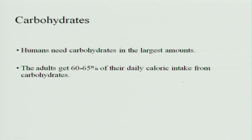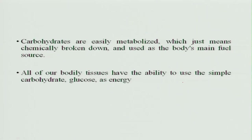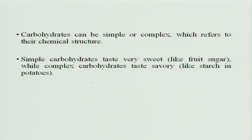Carbohydrates: humans need carbohydrates in larger amounts — 60 to 65 percent of total calories should come from carbohydrates. All the staple foods we eat are carbohydrate-based, and carbohydrates are easily metabolized, meaning they are chemically broken down and used as the body's main fuel source. All body tissues have the ability to use the simple carbohydrate glucose as energy, through direct breakdown and utilization.